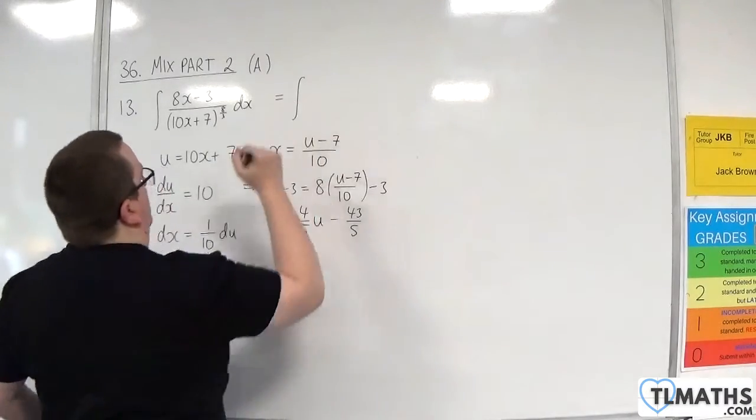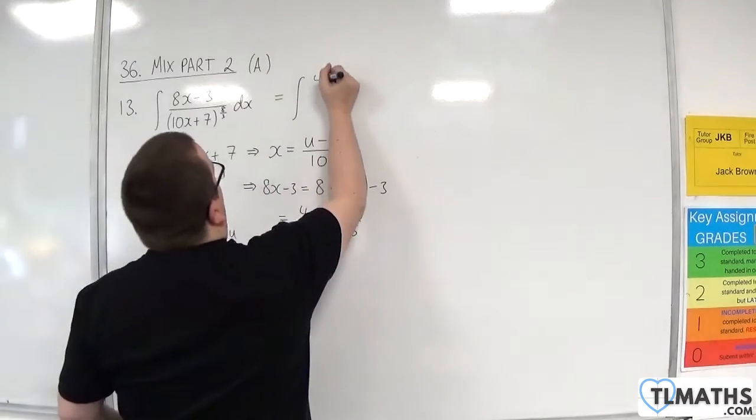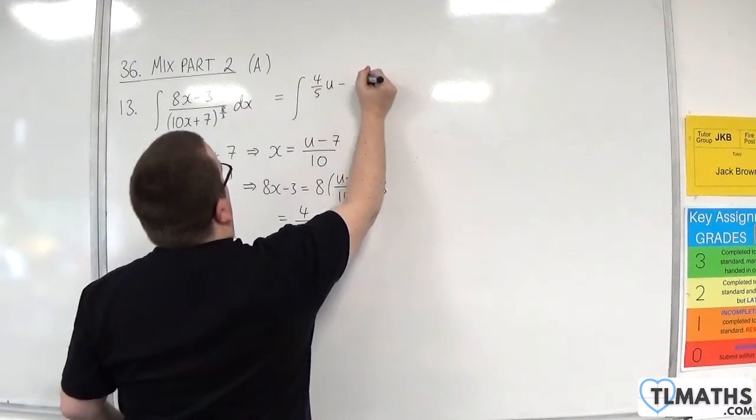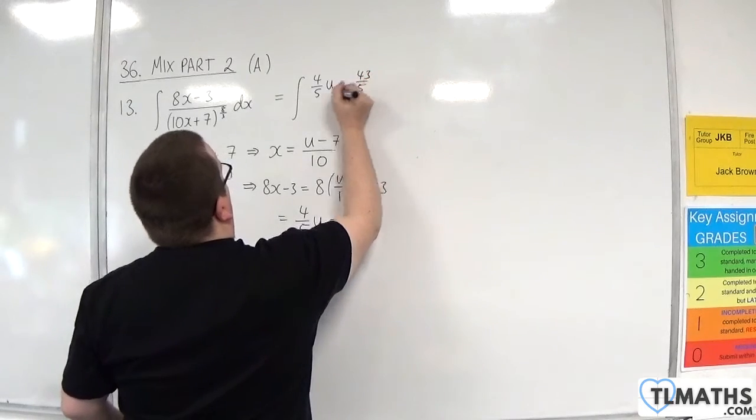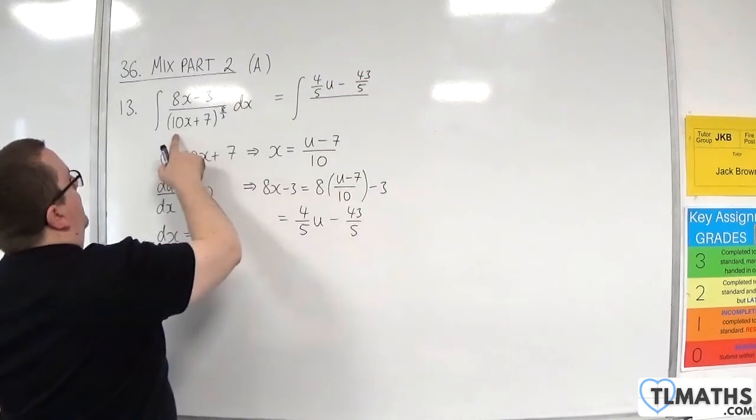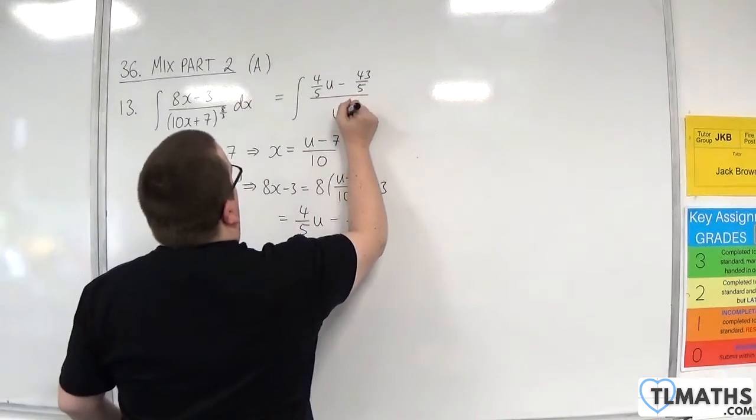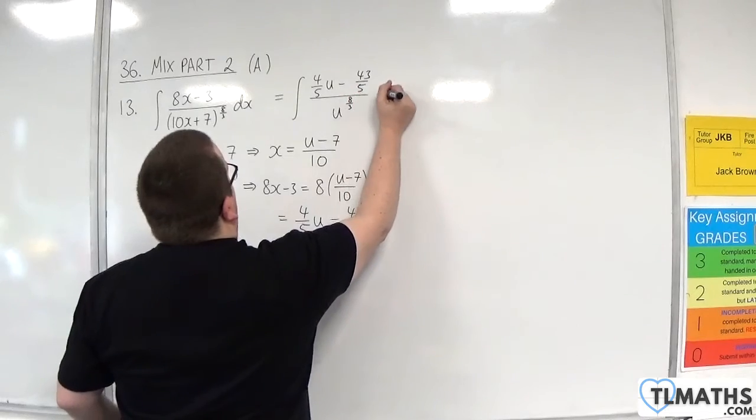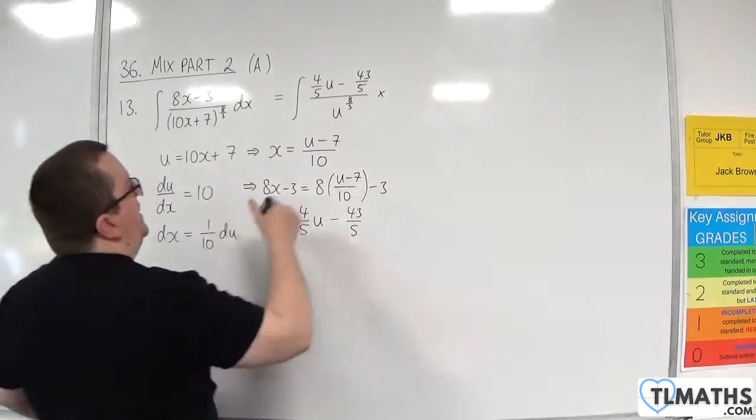So we have the integral of 4 fifths u take away 43 fifths over u to the 8 thirds, and the dx has been replaced with 1 tenths du.